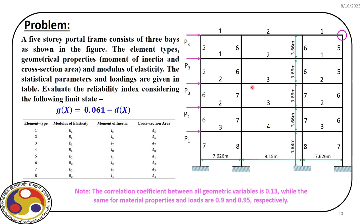The limit state in this case is: G(x) = 0.061 minus d(x), where d(x) is the displacement corresponding to a set of random variables defined by capital X. The allowable deformation is 0.061, and we measure the displacement at the topmost corner of the portal frame.